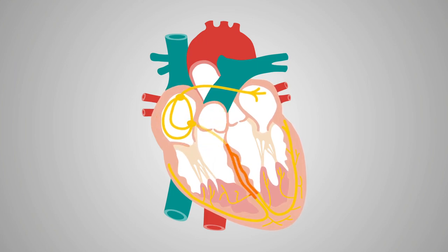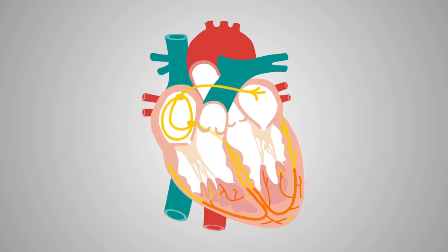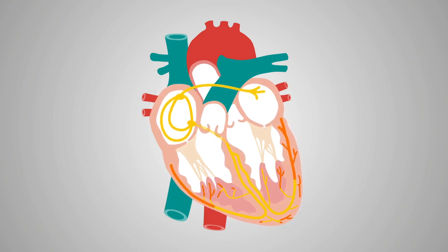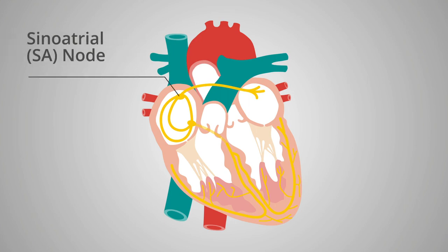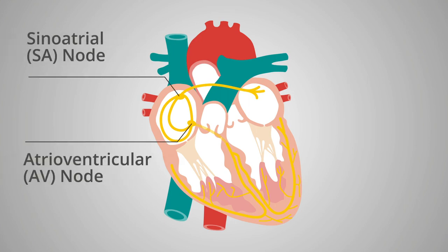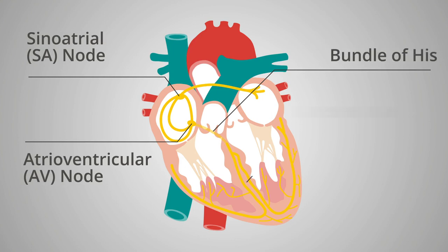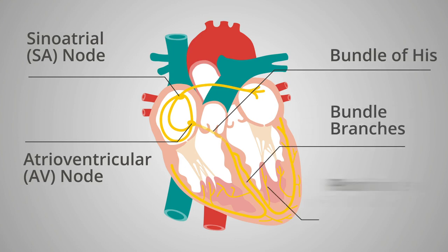The electrical activity within the heart can be monitored via an electrocardiogram or ECG. The cardiac conduction system comprises of the sinoatrial SA node, atrioventricular AV node, bundle of His, bundle branches, and Purkinje fibers.